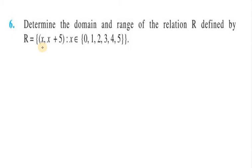So first of all we need to write R in roster form. So R can be written as x must be 0 first. Then x plus 5. It will be (0, 5).